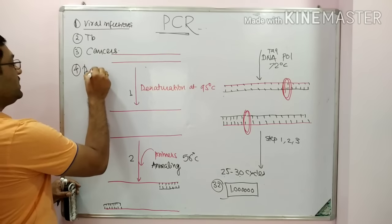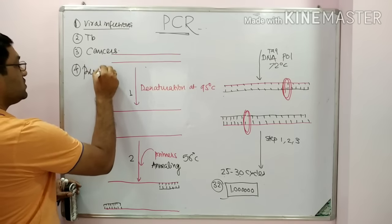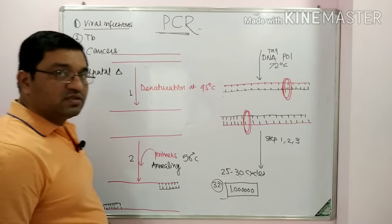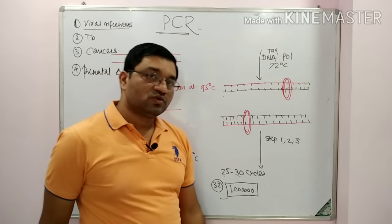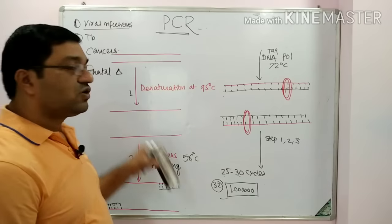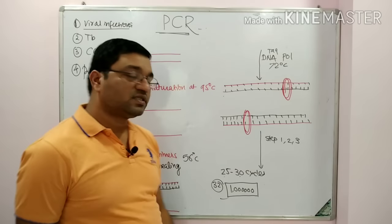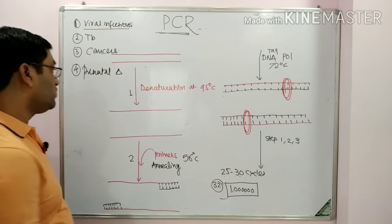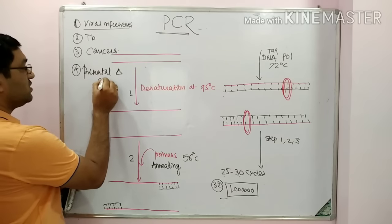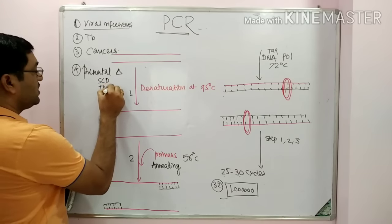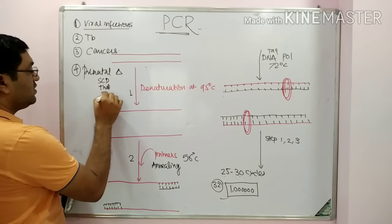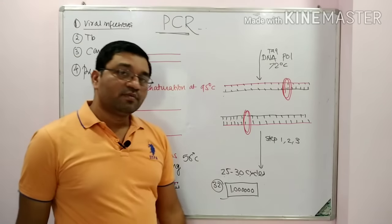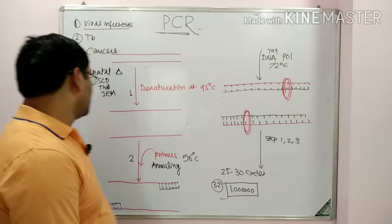Fourth, PCR is useful in prenatal diagnosis. For that, chorionic villus sample, CVS, or sample from amniocentesis is taken and PCR is done. It is useful for diagnosis of various diseases such as sickle cell disease, thalassemia, and various inborn errors of metabolism.